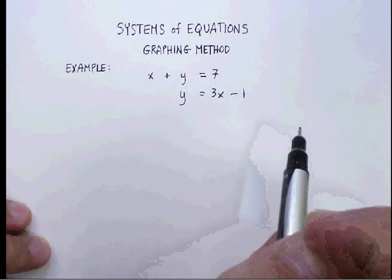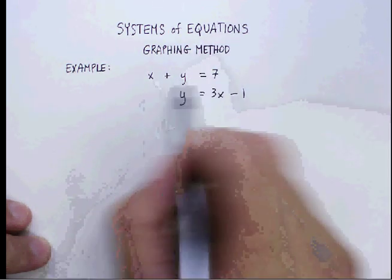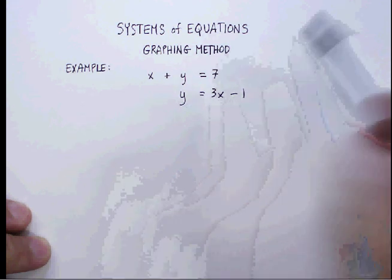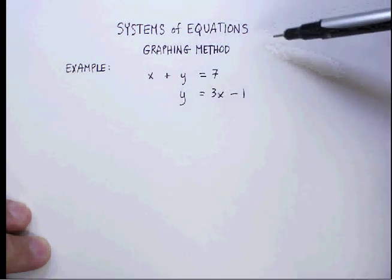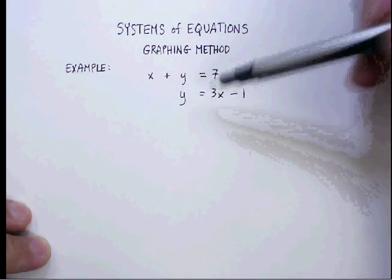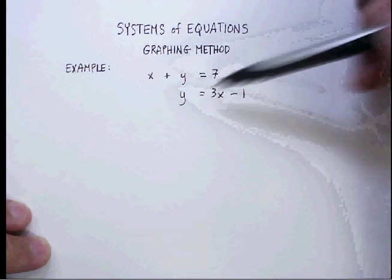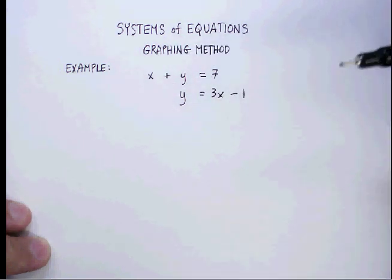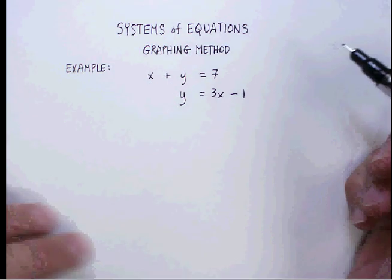Now, think of what that might mean visually. If you were to graph this line and graph this line, the intersection between those two lines is that point that works in both equations. So that's really what we're looking for, and we're going to use the graphing method to do that.